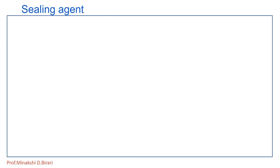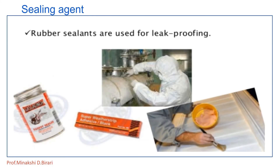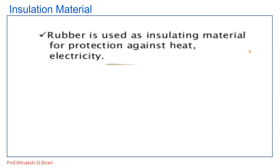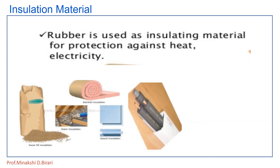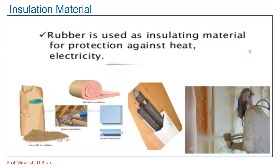Rubber is also used as a sealing material. Rubber sealants are used for leak-proofing. Additionally, rubber is used as an insulating material for protection against heat and electricity.